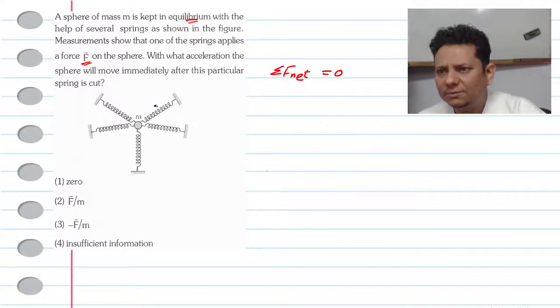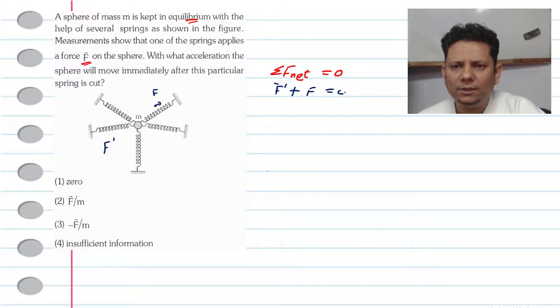Now let us say this spring is equal to zero. So we can say F dash in vector form plus F will be equal to zero. So you have F dash vector form, F dash is equal to zero, and F for this particular spring is equal to zero.